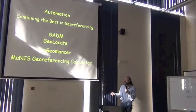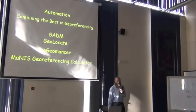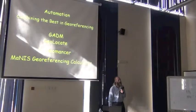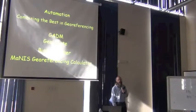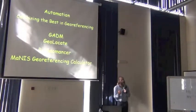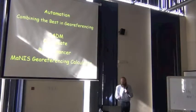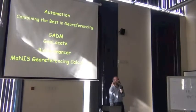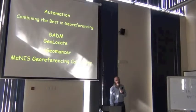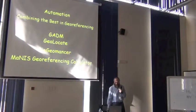GeoLocate worked, in the earlier days, on a desktop georeferencing application — one in which you could enter individual textual descriptions and have the software return the georeference for you. Or you could batch load, that is to say, upload an entire set of locations and have the software return the georeference for you.